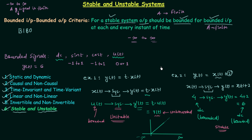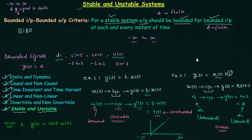This is how we need to check the stability of a system. Now we will move to the homework problem. We only have one homework problem: y(t) = sin(t)·x(t). You need to check the stability of this system, and once you have your answer, post it in the comment section. In the next lecture, we will solve a few more problems based on stable and unstable systems.